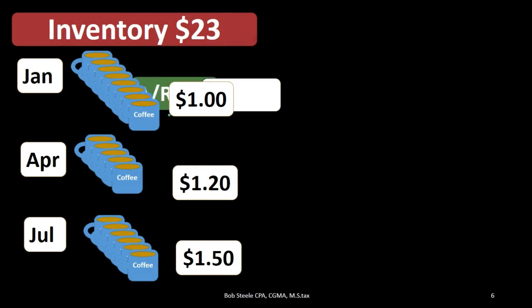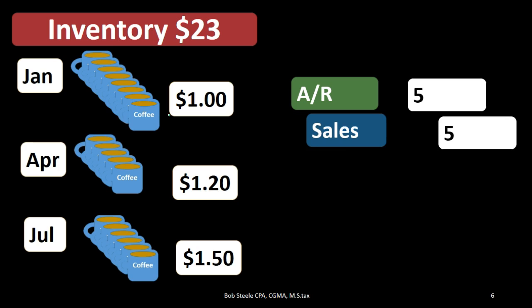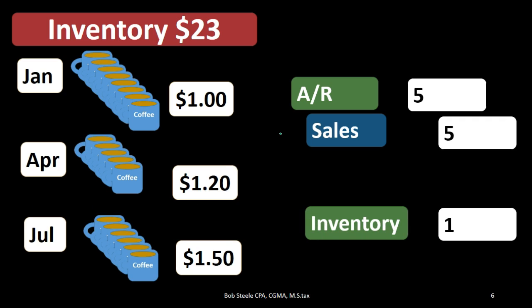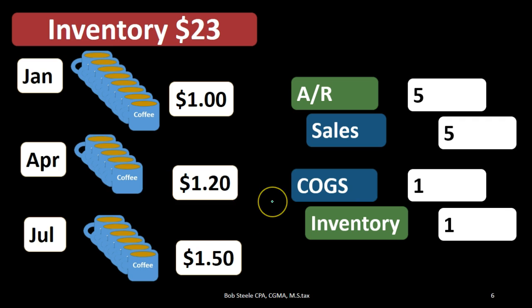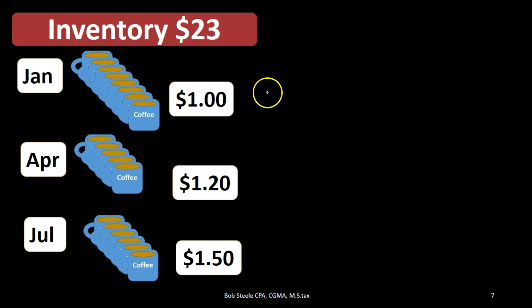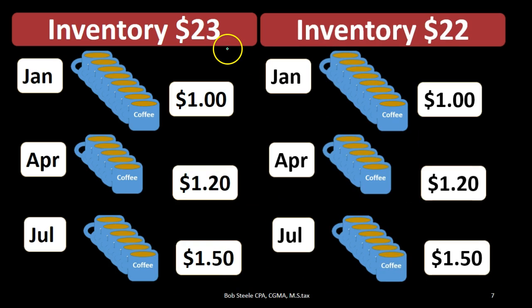Under FIFO, the sales price is $5, so we record accounts receivable and sales revenue of $5. That has nothing to do with our cost. What we're tracking is inventory being reduced by $1 — the FIFO cost — and cost of goods sold going up by $1. Our inventory was at $23, and after subtracting that $1, we now have ending inventory of $22 under the first in first out method.